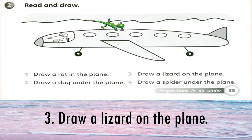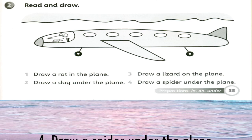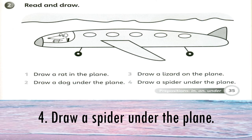And the last one, sentence number four. Draw a spider under the plane. Awak akan lukis a spider seekor labah-labah under. Under tu apa? Di bawah. Under the plane, di bawah kapal terbang. For example, sebagai contoh macam ni. Awak boleh lukis dekat mana-mana bahagian di bawah. Tak semestinya ikut dalam video.